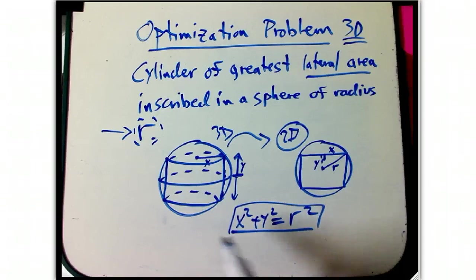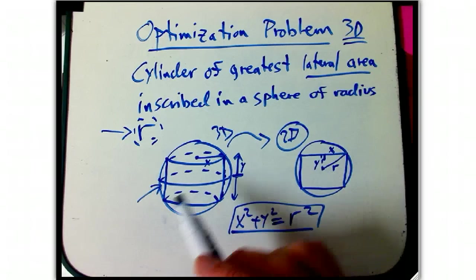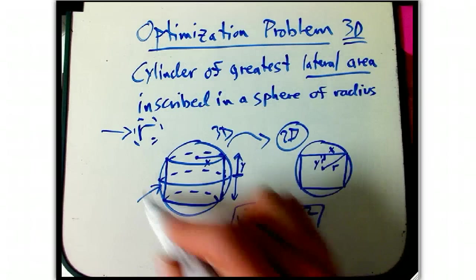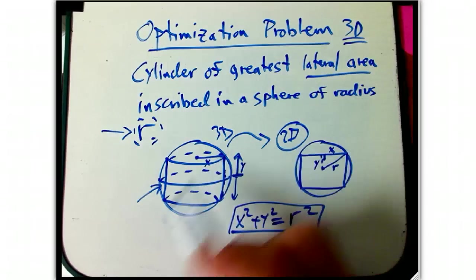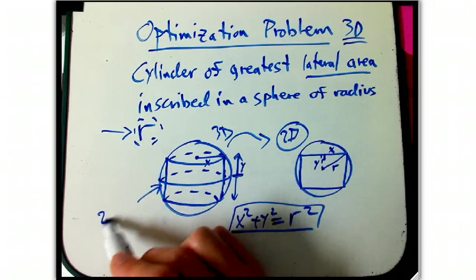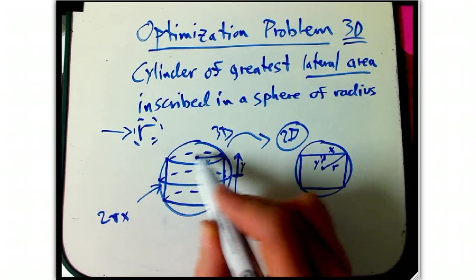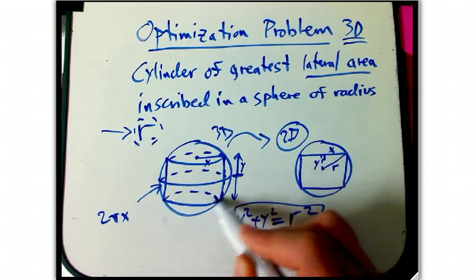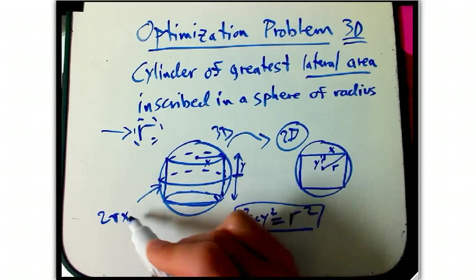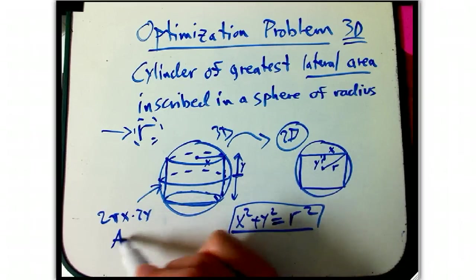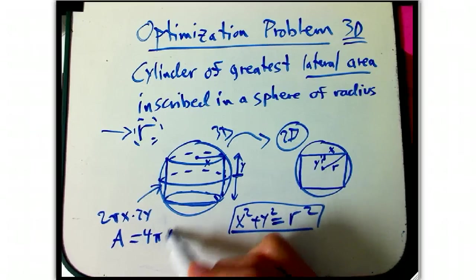What's our objective function? Well, that's the one place where we really do use the 3D nature, but just in terms of memorizing a formula. What's the lateral surface area, just the sides of the cylinder? Well, it's 2 pi X, because remember the X is the radius of the cylinder, so that's the circumference of, say, the bottom, times the height, which is 2Y. And so the surface area, the lateral surface is 4 pi XY.